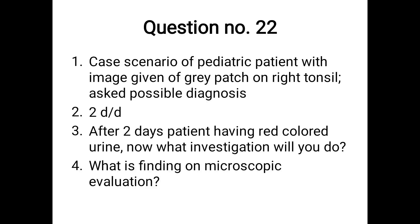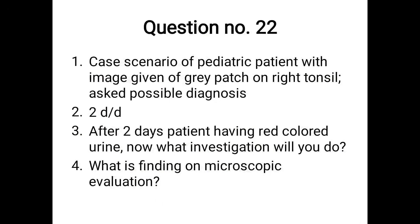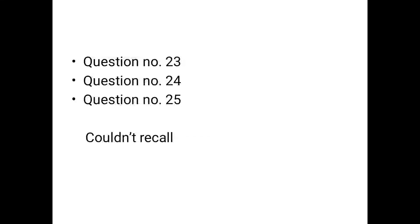Question 22: a pediatric patient with an image of a gray patch on the right tonsil. Possible diagnosis: Group A beta-hemolytic Streptococcus pharyngitis. Differential diagnoses: diphtheria, peritonsillar abscess. After two days, the patient had red-colored urine — send urine routine microscopy to suspect post-streptococcal glomerulonephritis (PSGN). Microscopic finding: RBC casts.